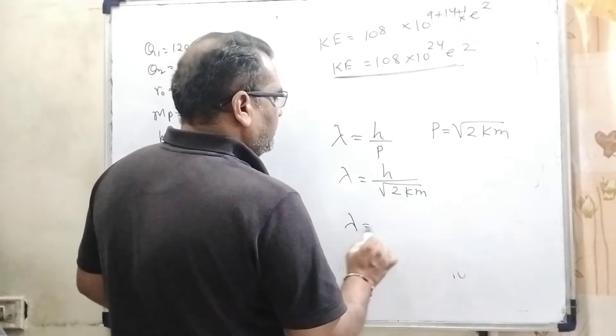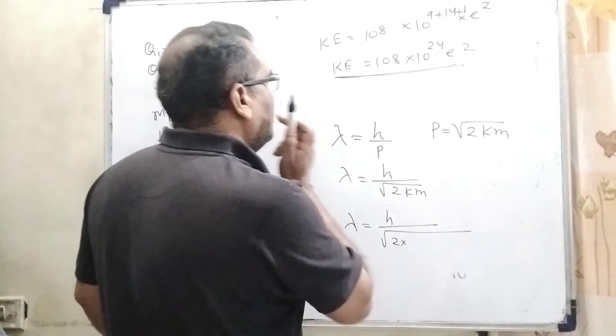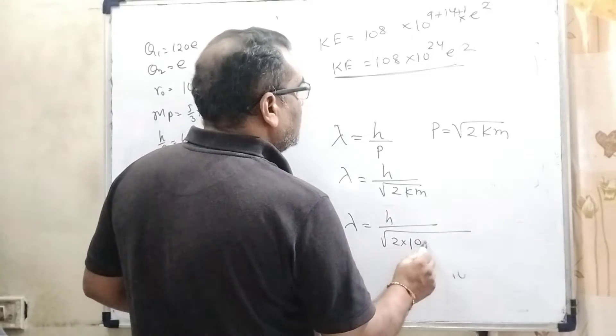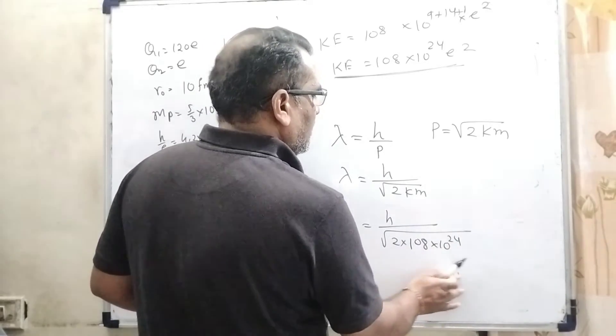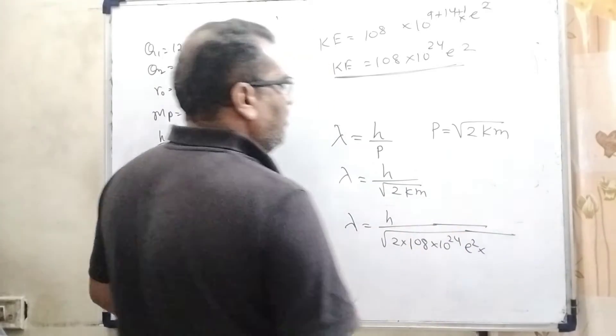Now substitute this value: lambda = h/√(2Km). Substitute the value of K, which is 108 × 10^24 × e².